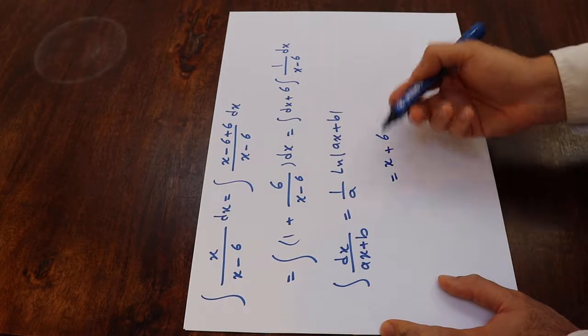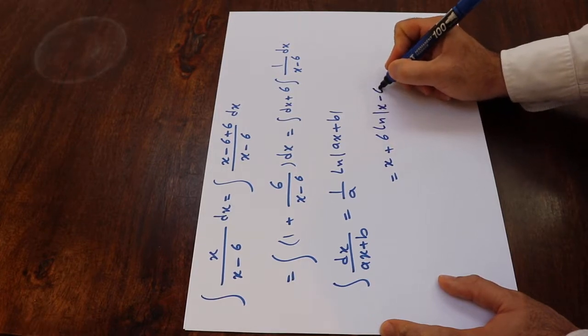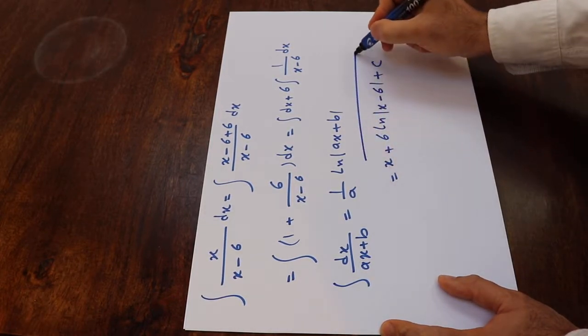Here, a is equal to 1. So therefore, 1 divided by 1 is 1 times ln of x minus 6 plus c, which is the constant of integration.